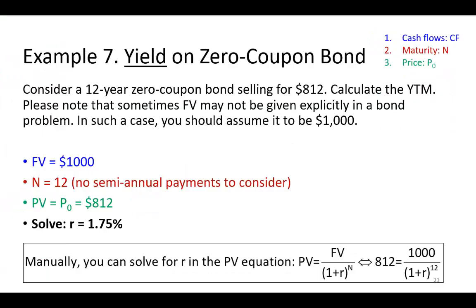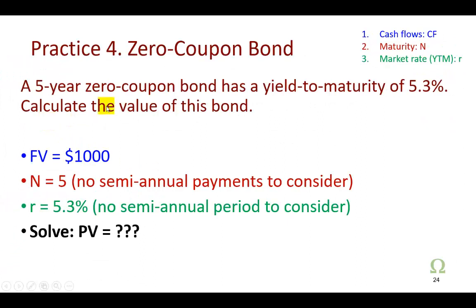And so, for your own practice, you have this problem that says a five-year zero coupon bond has a yield to maturity of 5.3%. What's the value? So, here's your input, and here's your guide right here, your prompt as to what the input should be. And so, you can easily hook it up with your calculator, if you want to. And that's it.